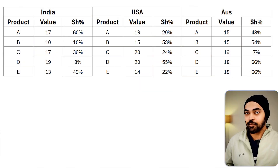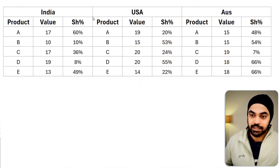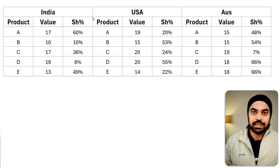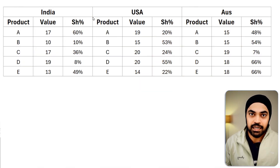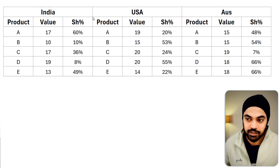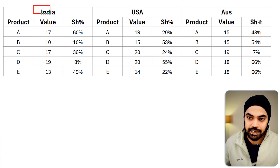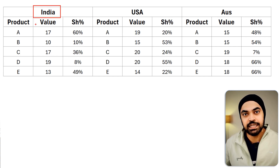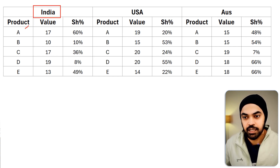I'm in Excel and that's where I've got my data right here. In the data we clearly have two headers: the main header which is the country, and then we have three sub-headers — the product, the value, and the share percentage.